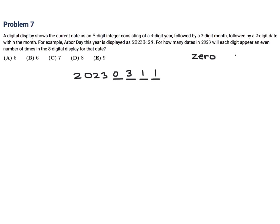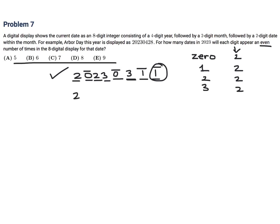Let me explain what they mean by each digit appearing an even number of times. For example, the 0 appears twice — 2 is an even number. The 1 appears twice, the 2 appears twice, the 3 appears twice — all even numbers. That's what they mean. I initially thought they meant the number itself is even, but that's not what they mean. We obviously have to come up with other valid dates. The answer choices suggest there are at least 5 and at most 9.